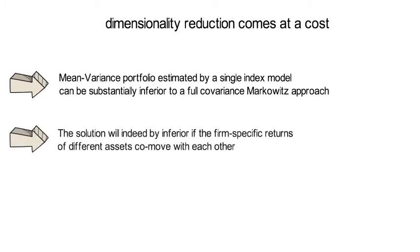The solution will indeed be inferior if the firm specific returns of different assets co-move with each other. That is because the single index model builds the covariance estimate sigma hat with the assumption that epsilon i and epsilon j have a zero correlation.